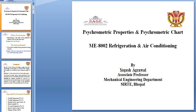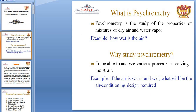Hello students, today I will discuss psychrometric properties and the psychrometric chart. This is part of Unit 4 and the subject name is Refrigeration and Air Conditioning. Psychrometry is the study of the properties of the mixture of dry air and water vapor. In psychrometry, we study dry air, water vapor, and the mixture of dry air and water vapor.